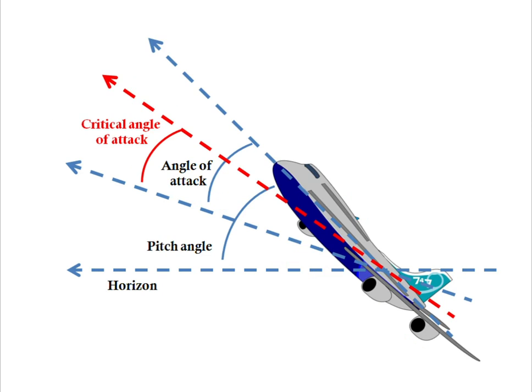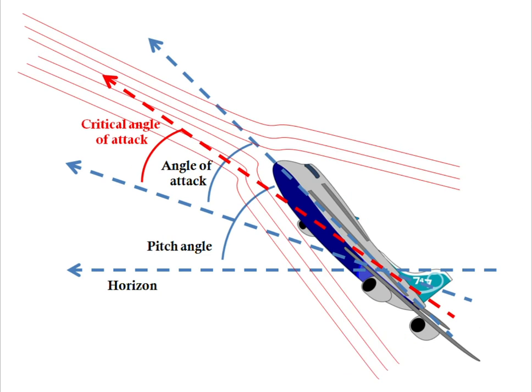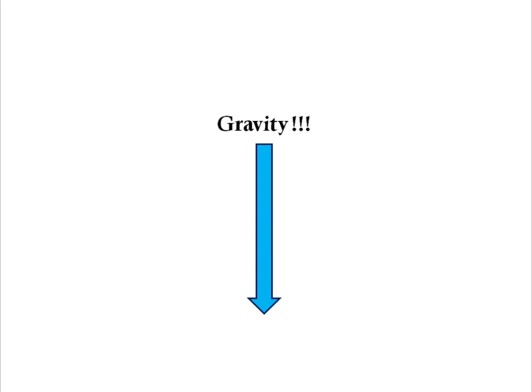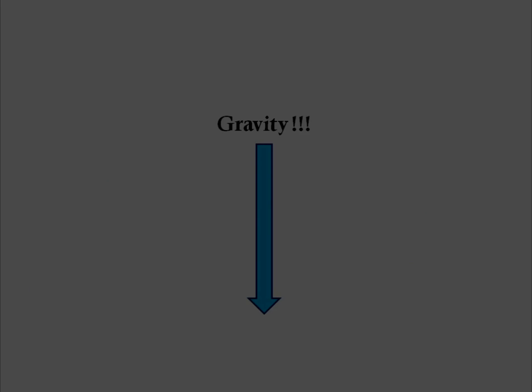However, if the angle of attack is increased beyond its critical value, the air flow around the wings gets separated, thereby reducing the ability of the airplane to generate lift. Without sufficient lift, the airplane loses its ability to fly and drops under the influence of gravity. This condition is referred to as a stall.